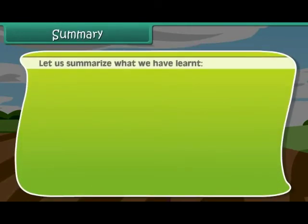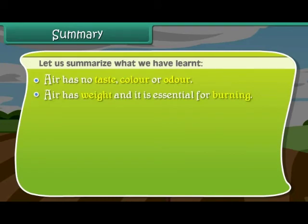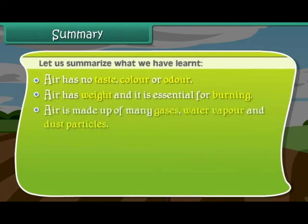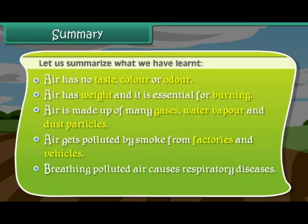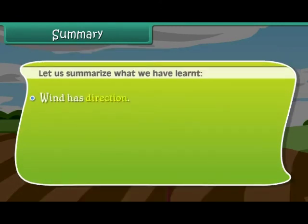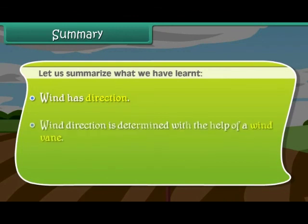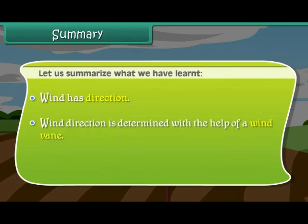Let us summarize what we have learned. Air has no taste, color, or odor. Air has weight and it is essential for burning. Air is made up of many gases, water vapor, and dust particles. Air gets polluted by smoke from factories and vehicles. Breathing polluted air causes respiratory diseases. Moving air is known as wind, and wind direction is determined with the help of a wind vane.